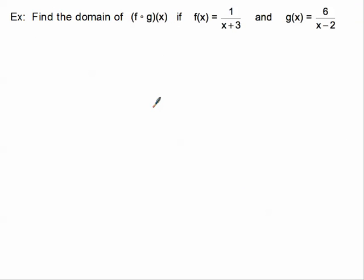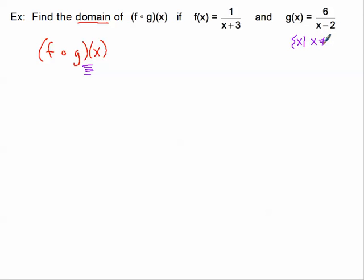Here's our first example: find the domain of the composite function f of g of x. Our sights are first on g of x, so let's forget about f of x for a minute. Since g of x has a denominator, there's going to be a chance for a domain restriction — and indeed there is. I know that x cannot be 2, because 2 minus 2 is 0, and you cannot divide by 0.